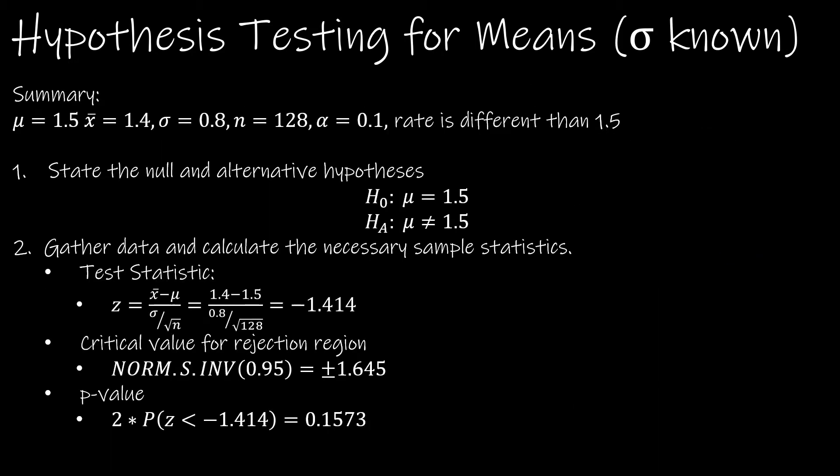We have already stated the null and alternative hypotheses on the last slide when we talked about all of the important information. And that is that the null hypothesis is that it's 1.5, just like the rest of Europe. And the alternative hypothesis is that it's not 1.5. Now, before we look at the test statistics, let's talk about what a two-tailed test is.